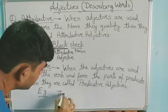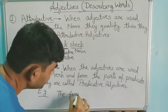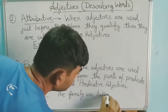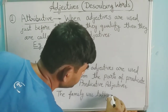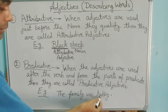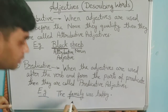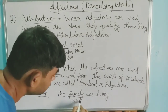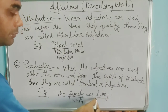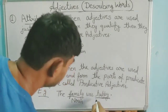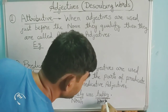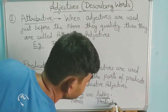For example: 'The family was happy.' Here, who are we describing? Family is happy. Family is our collective noun, and the word 'happy' is qualifying it — describing that the family is happy. So this is our Predicative adjective, used right after the verb 'was.'